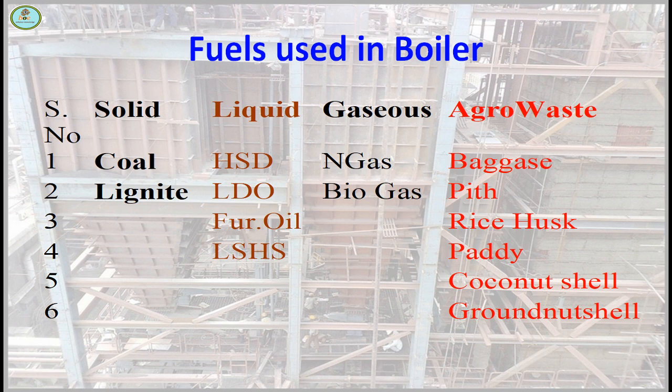Types of fuels used in boilers: solid — coal and lignite; liquid fuel — HSD, LDO, furnace oil, LHS; gaseous — natural gas, biogas; and biomass fuels such as pitch, rice husk, paddy, coconut shell, and groundnut shell.